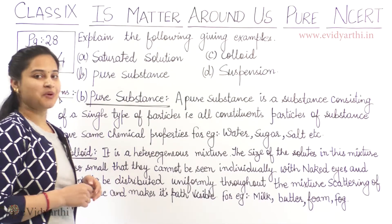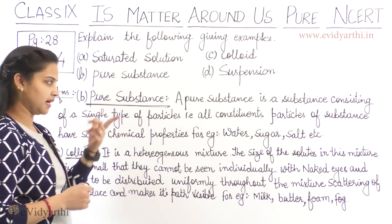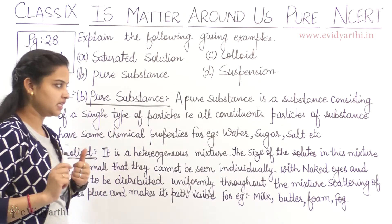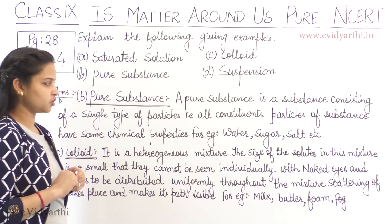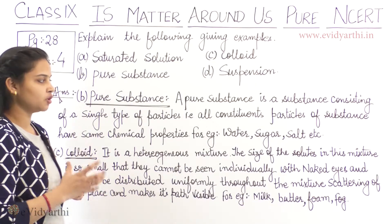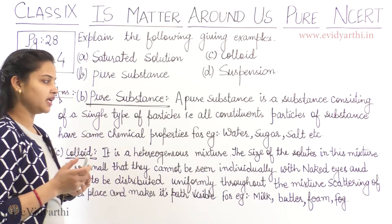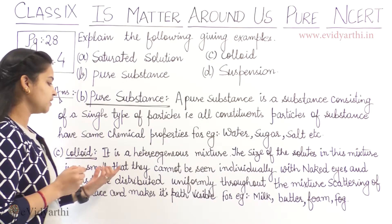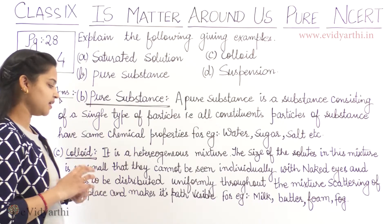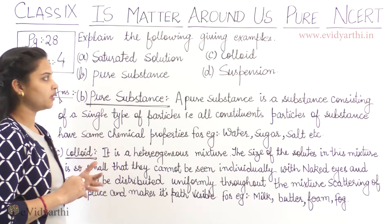Pure substance: A pure substance is a substance consisting of a single type of particles — that is, all constituent particles of the substance have the same chemical properties. For example, water, sugar, salt, etc. Colloid: It is a heterogeneous mixture. The size of the solute in this mixture is so small that they cannot be seen individually with naked eyes, and seem to be distributed uniformly throughout the mixture. Scattering of light takes place and makes its path visible. For example, milk, butter, foam.